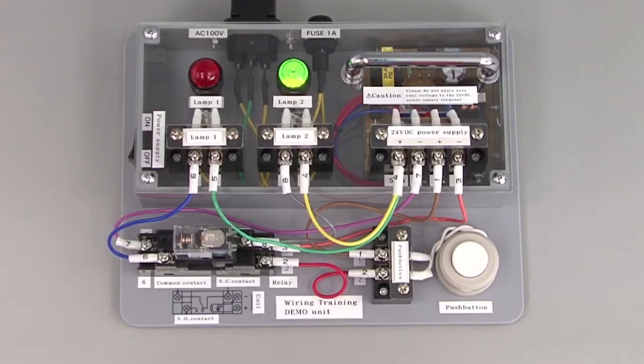When you turn the switch on, electricity runs through the normally closed contact and the blue light turns on.